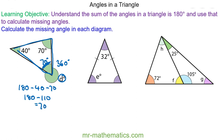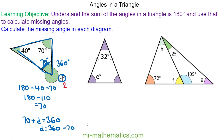For this angle of 70 degrees, we can work out angle D because they both add up to make 360. So 70 plus D will equal 360. So angle D will equal 360 take away 70, which is equal to 290 degrees.